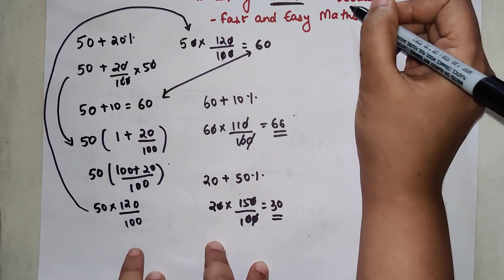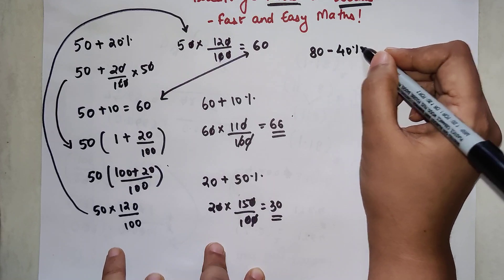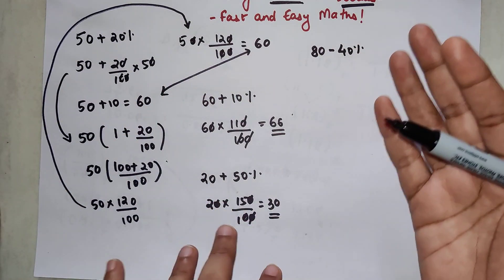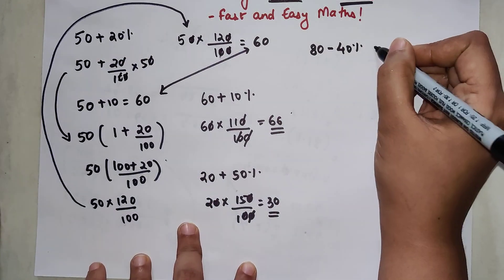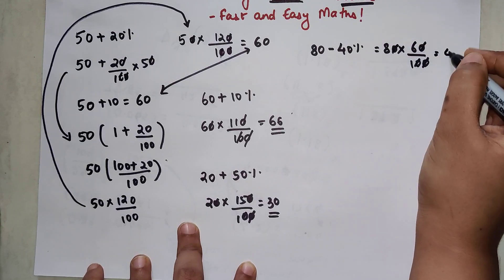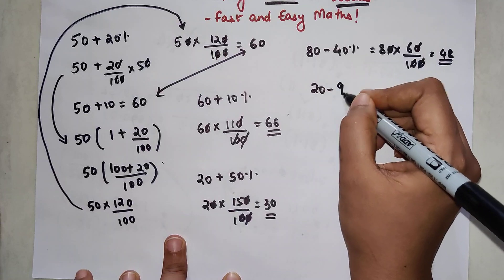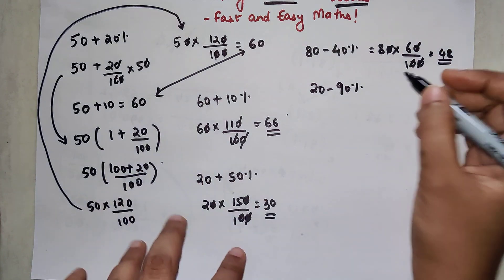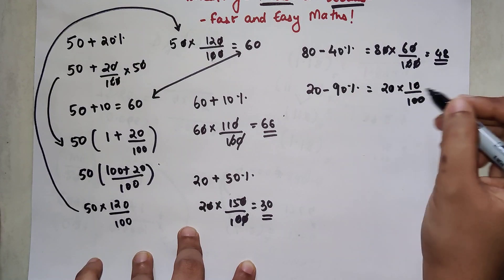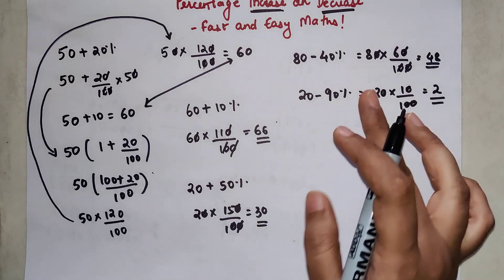Now let's see what happens with a decrease in percentage. If 80 is decreased by 40 percent, when decreasing we subtract from 100, so we do 80 into (100 minus 40) upon 100, which is 80 into 60 upon 100, giving a final answer of 48. Similarly, to reduce 20 by 90 percent: 20 into 10 upon 100 — the zeros cancel — giving a final answer of 2.